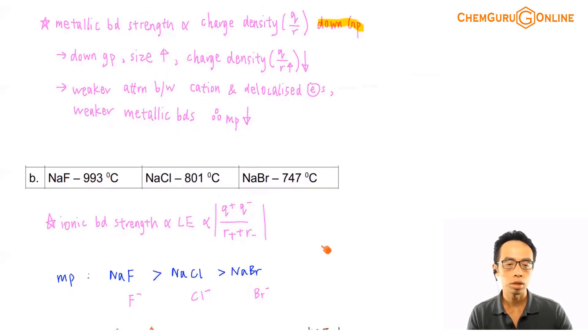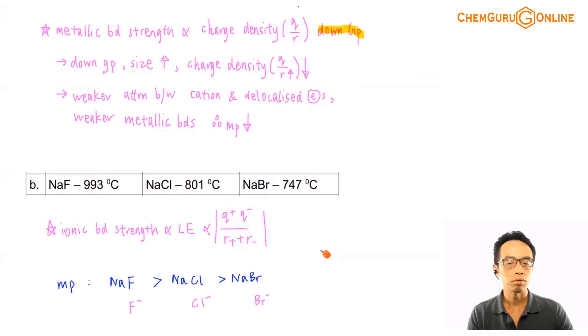So I think this is also interesting to keep in mind, metallic bond strength is related to valency, it's also related to charge density, if I compare down the group.